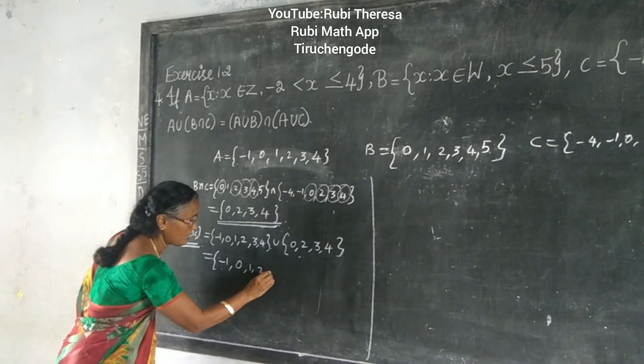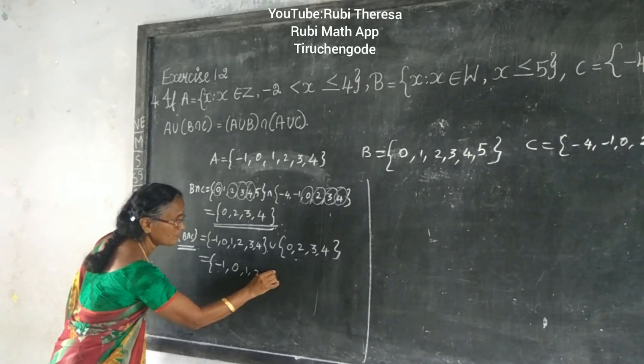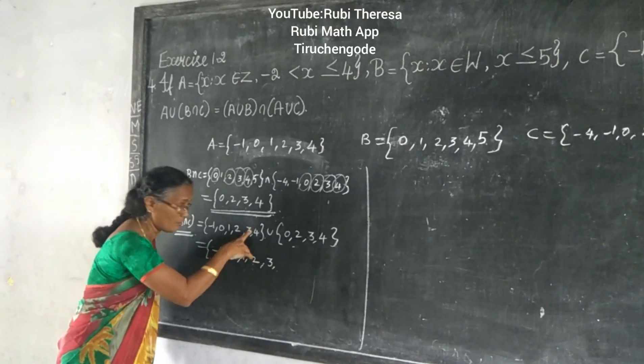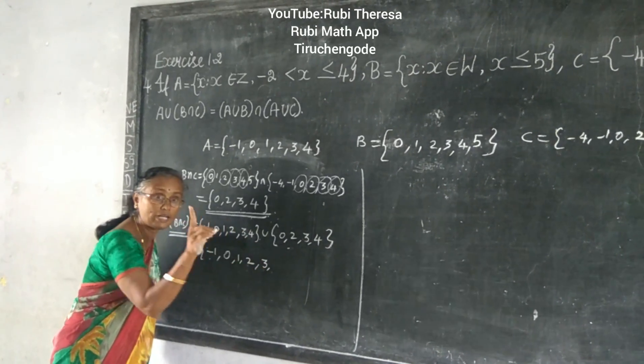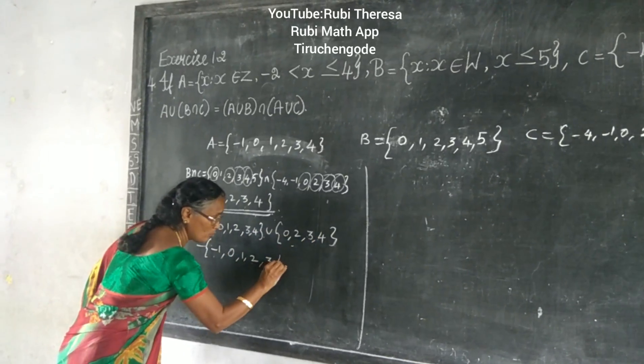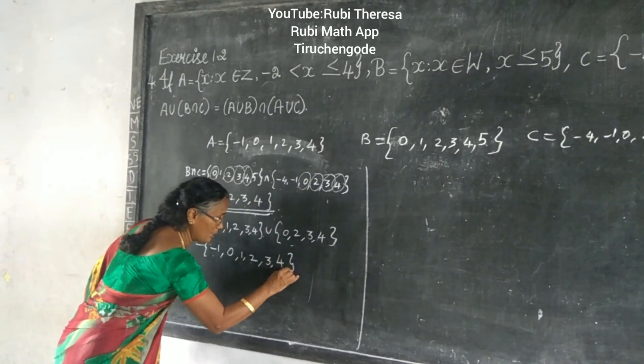3 is also in both sets, but you are writing it only once. Next: 4. Only once. So the LHS result is: {minus 1, 0, 1, 2, 3, 4}.